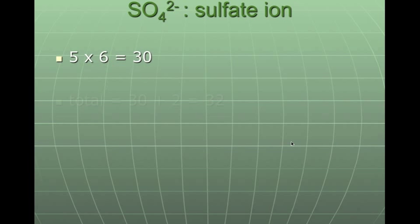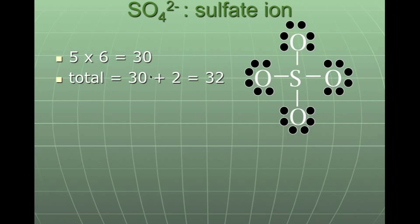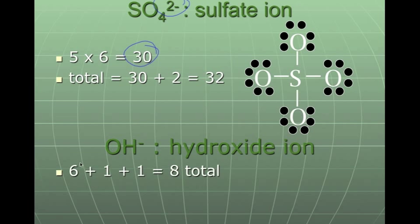Our last examples are sulfate ions, where we're going to add two, so we have sulfur, which has six, and then oxygen, which has 24, a total of 30, and then we add two to get 32. And then in hydroxide, we have six for the oxygen, one for the hydrogen, and we add one for the charge to get a total of eight to get that Lewis structure.